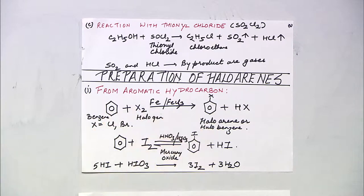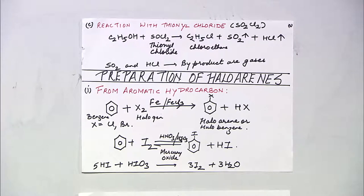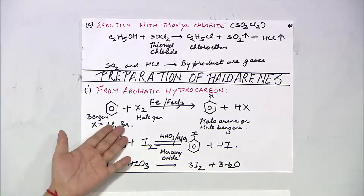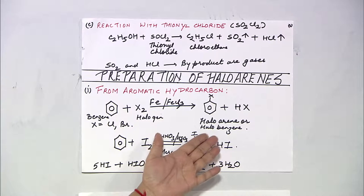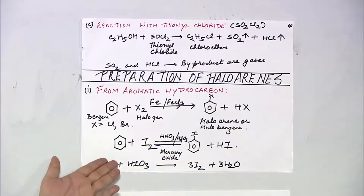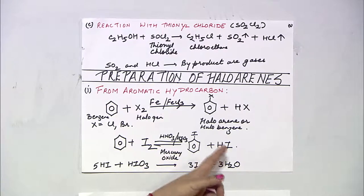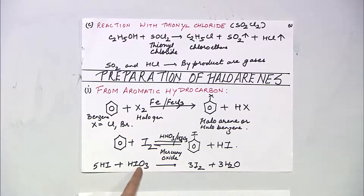For the preparation of haloarenes: benzene is reacted with halogens such as chlorine or bromine in the presence of Fe and FeCl3 to give chlorobenzene or bromobenzene plus HX. Reacting benzene with iodine in the presence of HNO3 and HIO3 gives iodobenzene plus HI, which then reacts with HIO3 to regenerate iodine so the reaction continues.